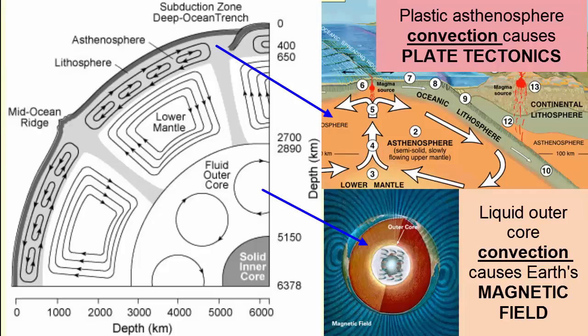This transfer of heat in a plastic or liquid medium is called convection and is the main cause of plate tectonics, convection of the asthenosphere, and the Earth's magnetic field, convection of the outer core.